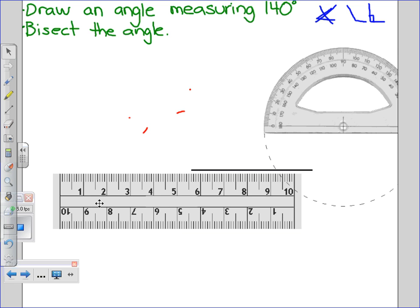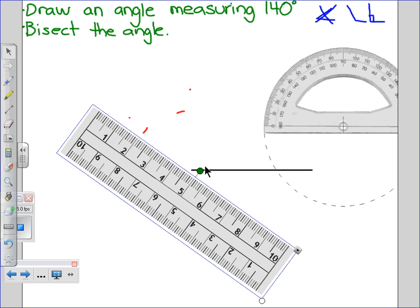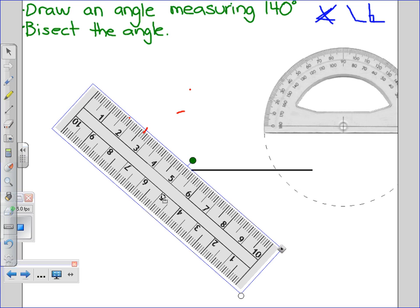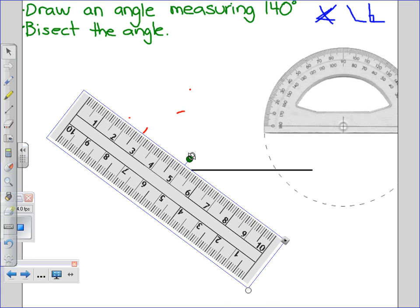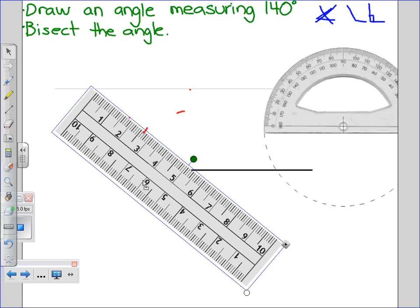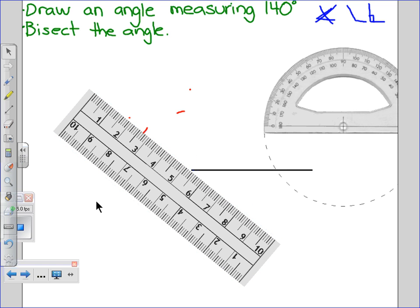I'm going to take my ruler, or flat edge. And I'm going to line up my ruler with the dot I drew and the vertex of the angle I'm creating. I'm now going to draw a straight line going from the vertex, going through the dot that is indicating 140 degrees.